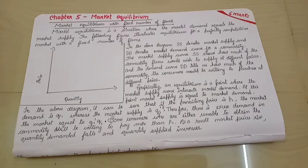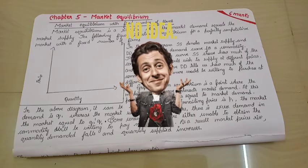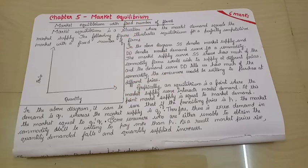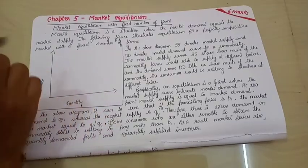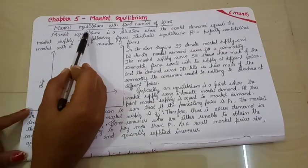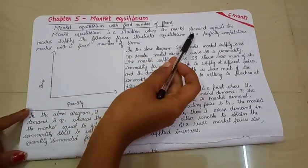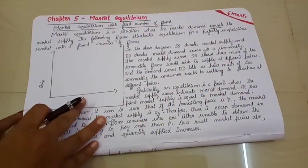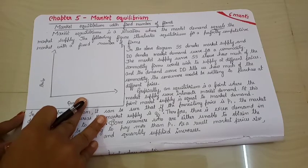So to study this question, first of all, we should know what is equilibrium. Most of you by now must be knowing. Again, for those who do not know or do not have any idea about equilibrium, I am repeating it again. Equilibrium is a position where the market demand is equal to the market supply. That is the equilibrium point.